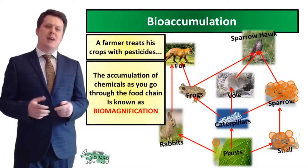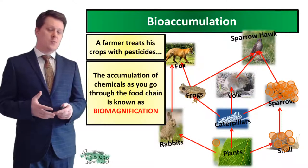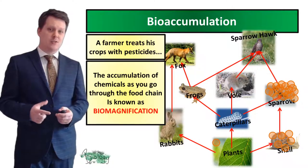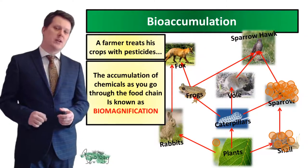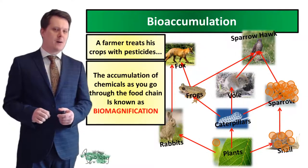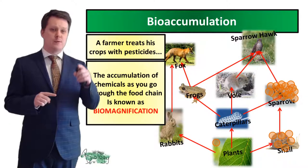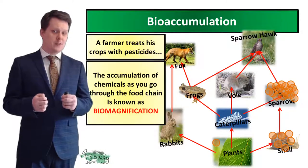This accumulation of chemicals as we go through the food chain is called biomagnification. We started off with a very small concentration of pesticide in our plants, and as we go up the food chain that concentration of poison increases.